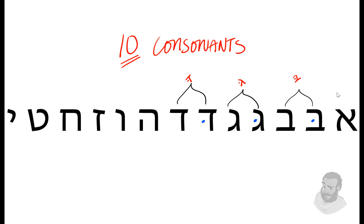So normally, one would say for the alphabet: Aleph, Beith — skip — Veith; Gimel — skip — Gimel; Daleth — skip — Valeth; He, Wa, Zayin, Hayith, Taith, Yodh.